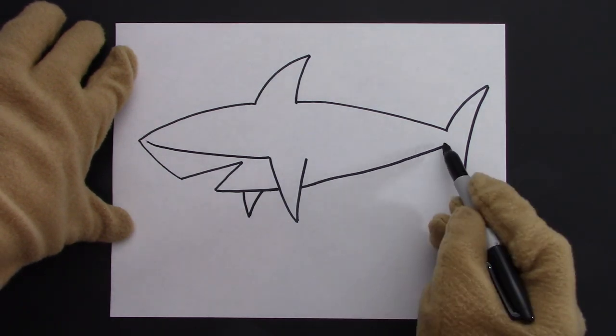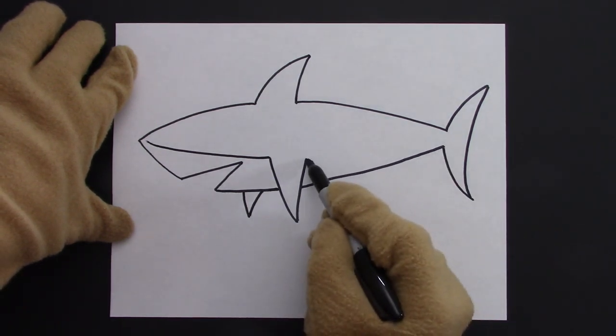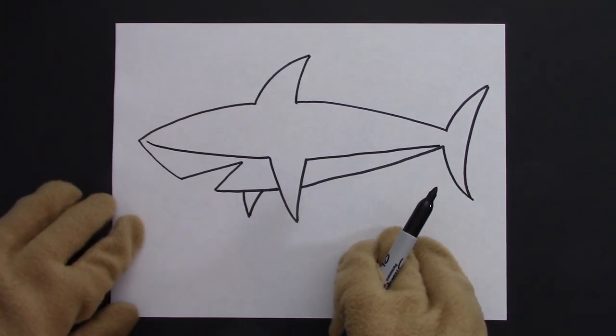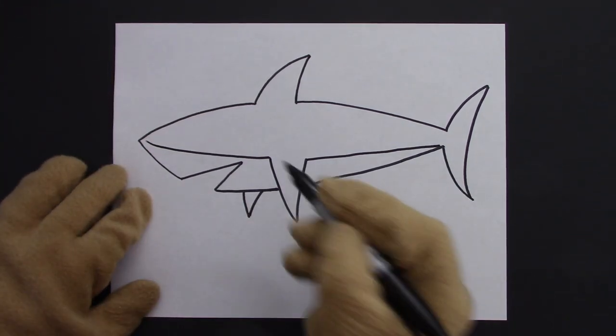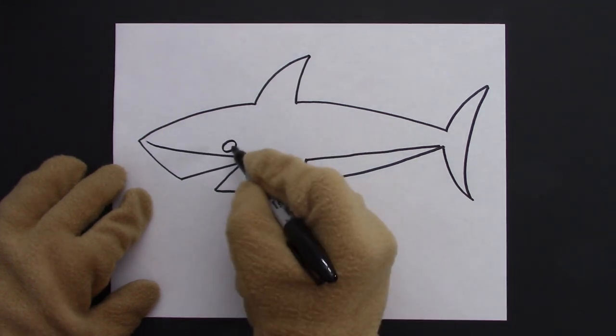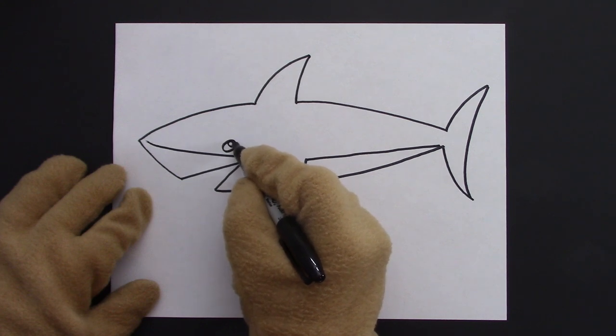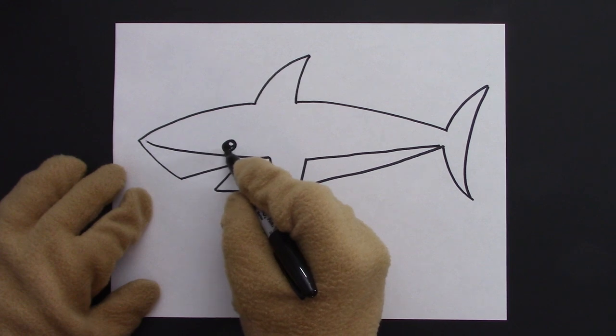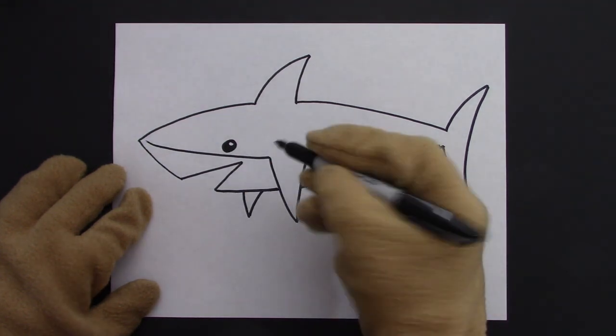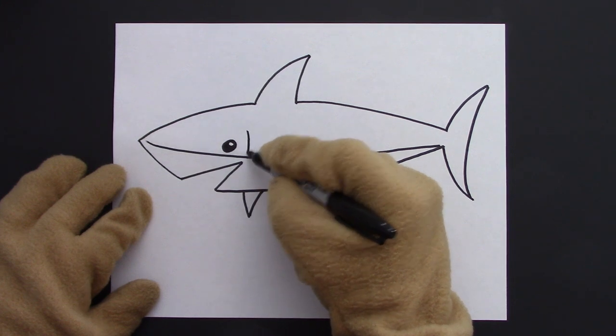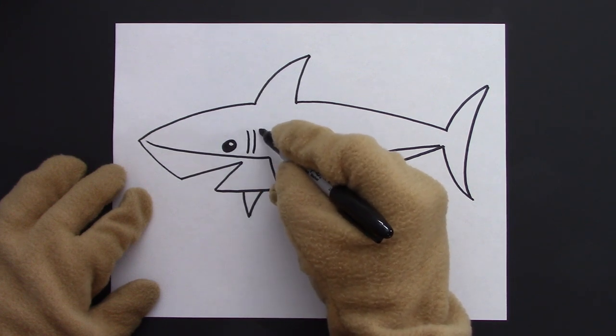Now you can draw the eye. Maybe a round circle, an oval shape. I like the ovals a little bit angled. I draw a small circle inside for the shine and color the eye black. And our shark has to breathe, so let's give him some gills. One, two, three. Perfect!